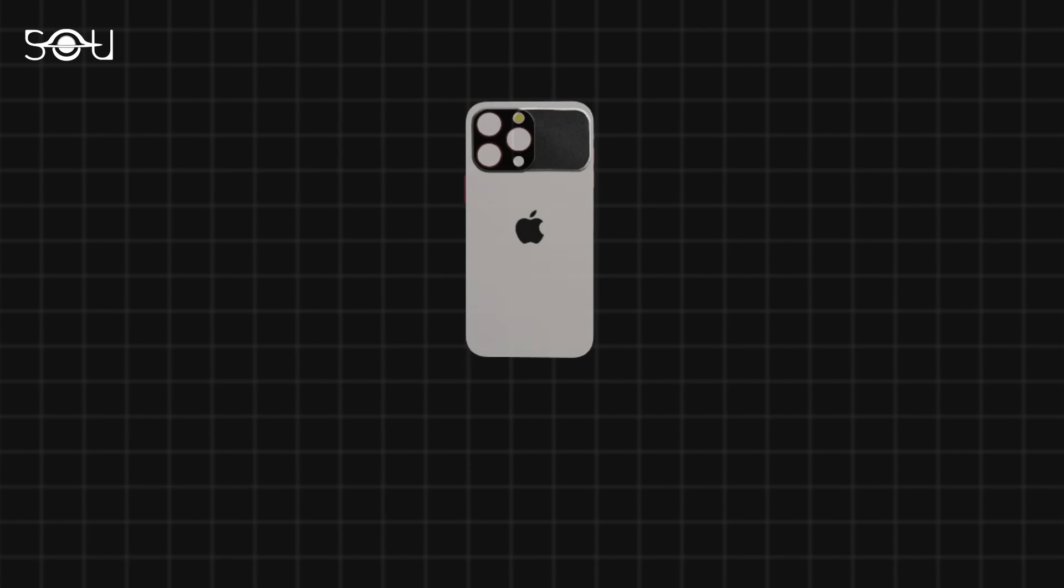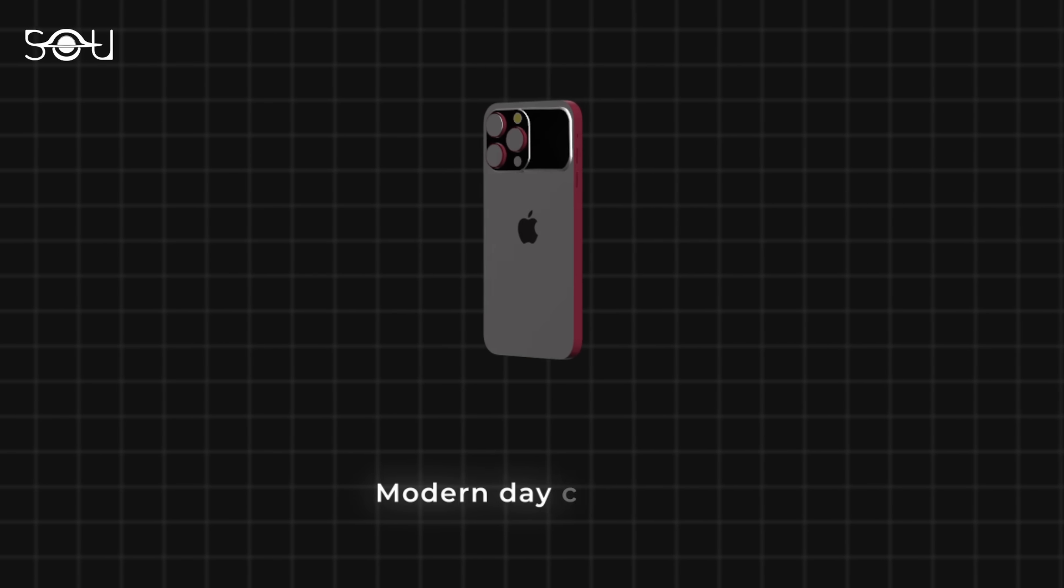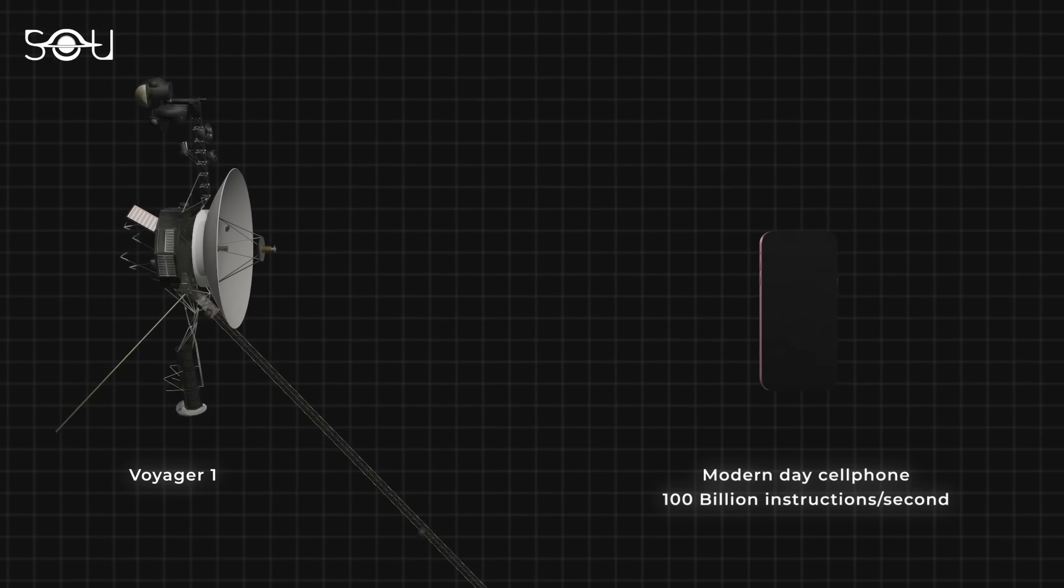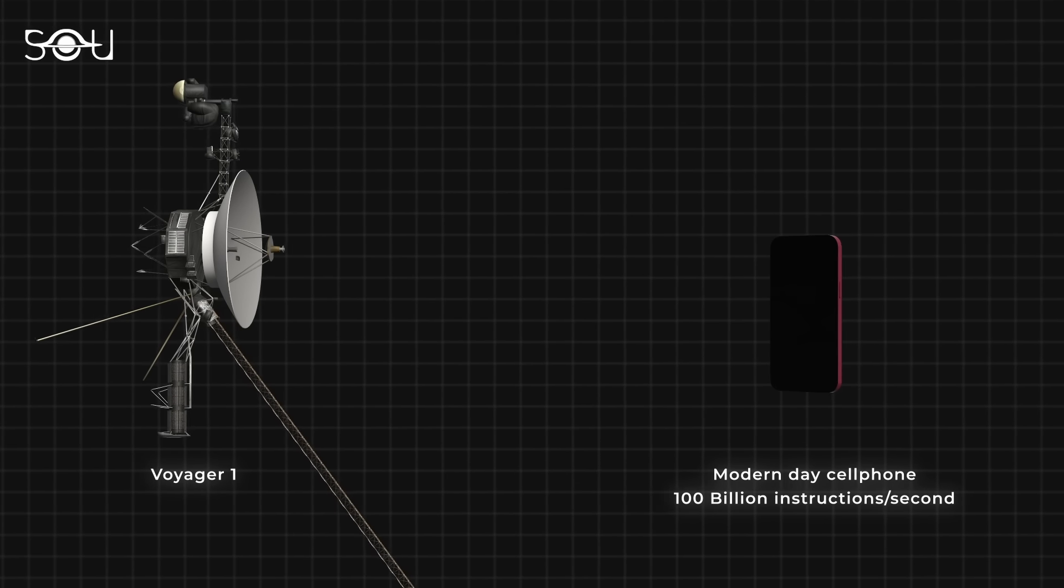As a comparison today, even the cell phone in your hand can handle more than 100 billion instructions a second. But the Voyager's computers can only process 8,000 a second.